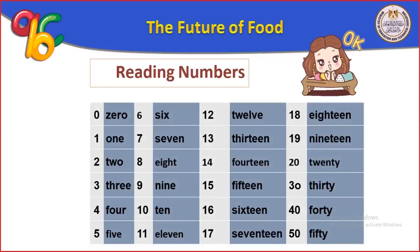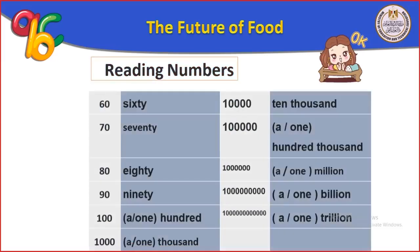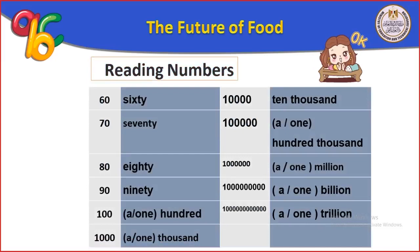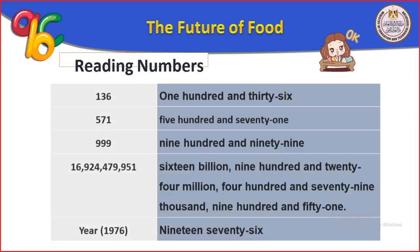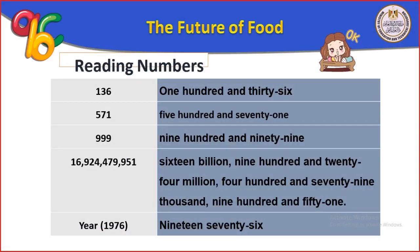Reading numbers: 0, 1, 2, 3, 4, 5, 6, 7, 8, 9, 10, 11, 12, 13, 14, 15, 16, 17, 18, 19, 20, 30, 40, 50, 60, 70, 80, 90, 100, and large numbers up to 16,924,479,951,1976.